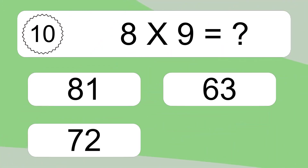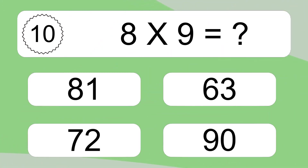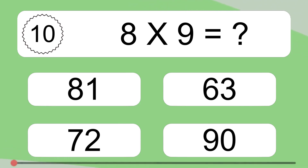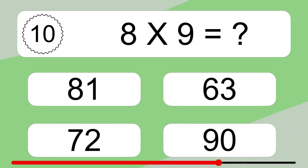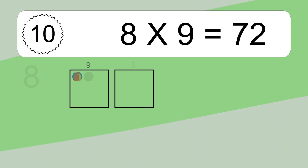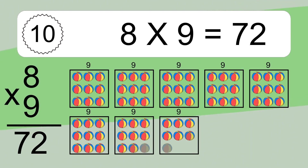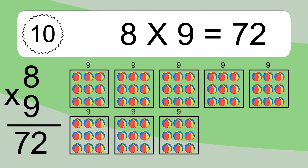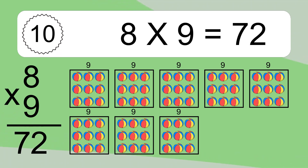Eight times nine equals what? Eight times nine equals seventy-two. We have eight boxes, and each box has nine colorful balls inside. If you count all the balls in all the boxes together, you will have eight times nine balls. This equals seventy-two balls.